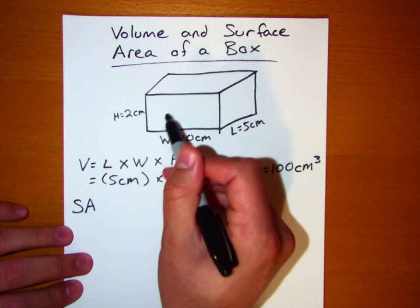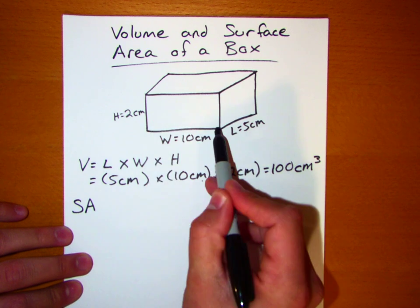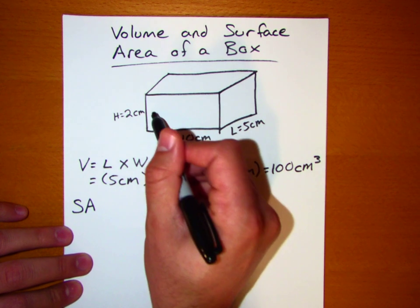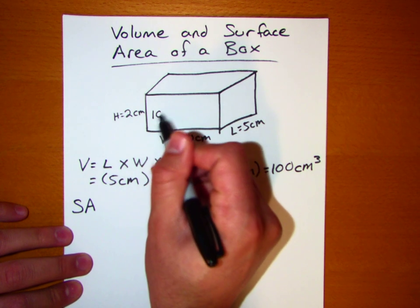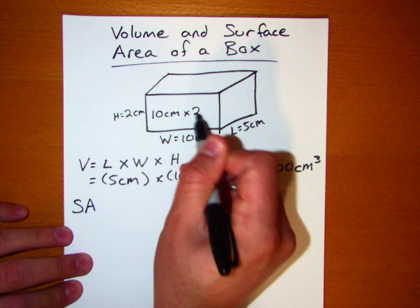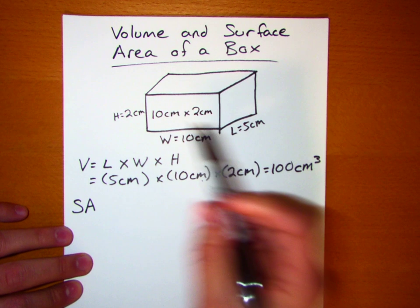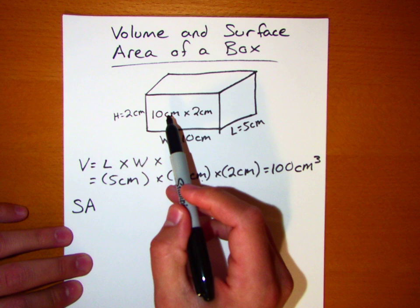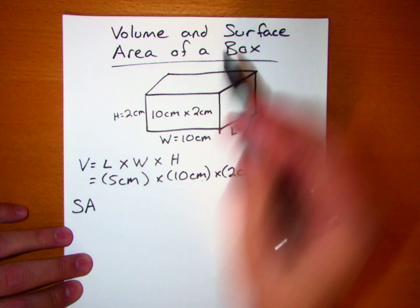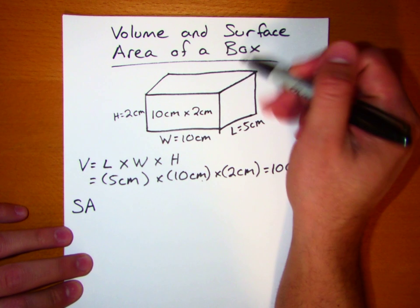This face right here has dimensions of 10 by 2. And remember, if this face is in the front, there's one just like it in the back of the box, so there are going to be two of them.